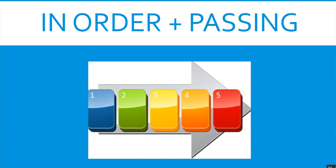These courses must be taken in order and completed with a passing mark. They cannot be taken at the same time as they are sequential, but they need to be completed before your three-year — or your five-year, for all you ROTC folks — preliminary credential expires.